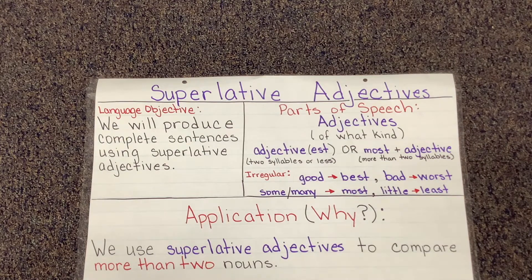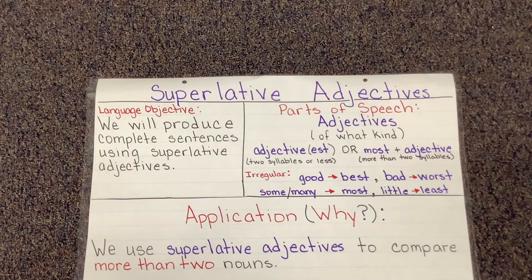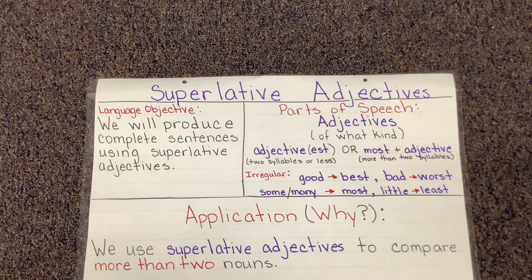When we talk about superlative adjectives we're focusing on the part of speech adjectives, specifically adjectives that tell what kind. If our adjective has two syllables or less, we're going to add -est to the end of our adjective. If our adjective has more than two syllables, we're going to add the word 'most' in front of our adjective and leave it as is.